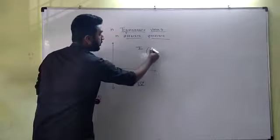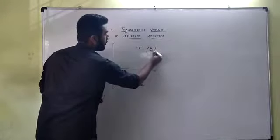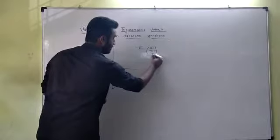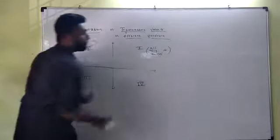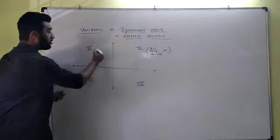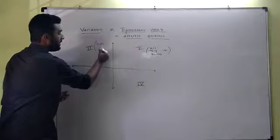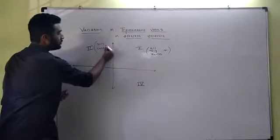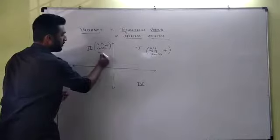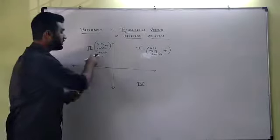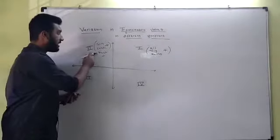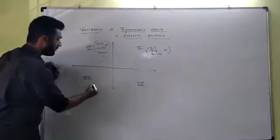What you have to remember here is that in this quadrant, all trigonometric ratios are positive. In this quadrant, only sin and cosec ratios are positive, the rest all are negative. So that means here, cos, sec, tan and cot will be negative.